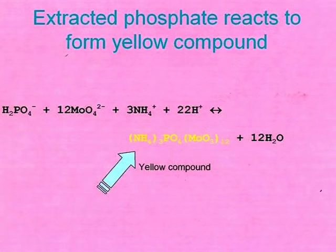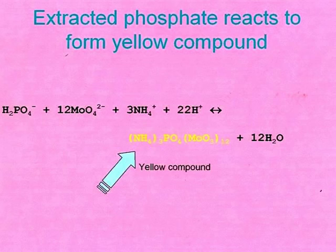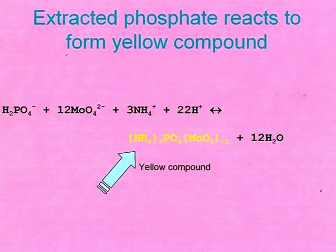A chemical is added to the extract, which forms a yellow compound, as given in the reaction you see. The more phosphorus is present, the more intense is the colour. This is measured with a spectrophotometer. The intensity of the colour — in fact the absorbance of the aqueous extract of the sample — is then compared to the intensity of the colour of several aqueous solutions prepared from one high-purity measurement standard.